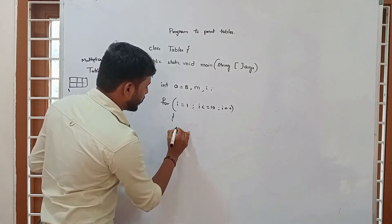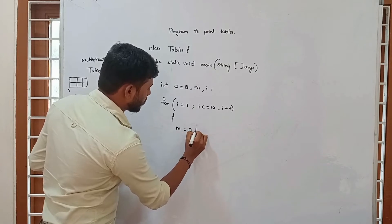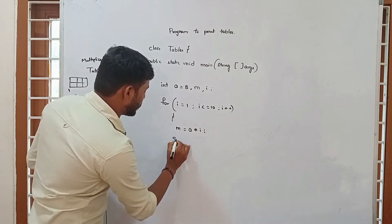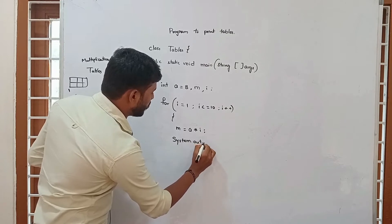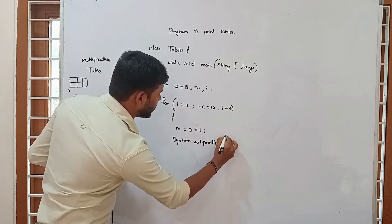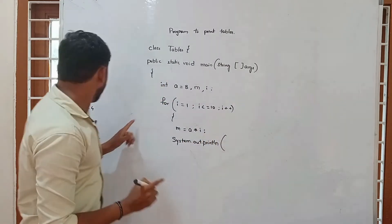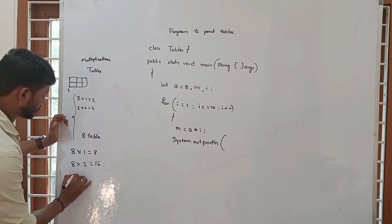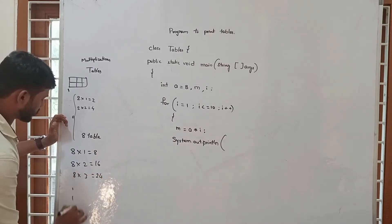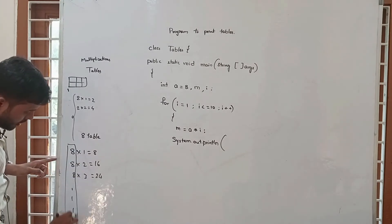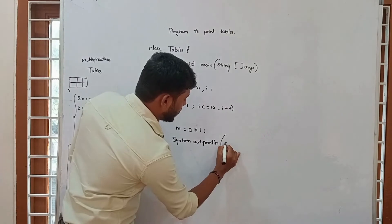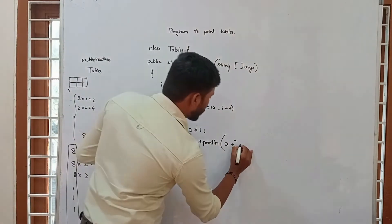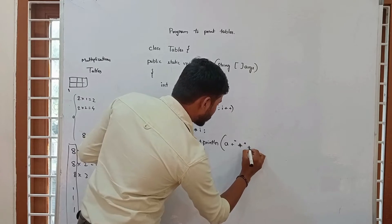Here I am opening the for loop. Inside the loop, m is equal to a multiplied by i. Then here I am building the System.out.println statement. Looking at the 8 tables output: 8, then 8 times 2 is 16, 8 times 3 is 24. In each row, 8 is printed statically, and then we see a star operator.